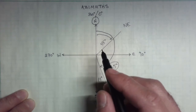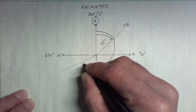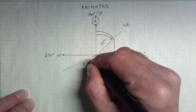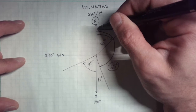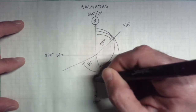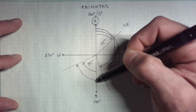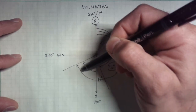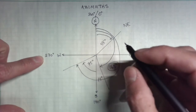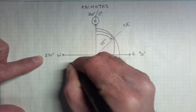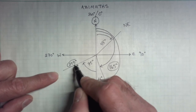In the southwest quadrant, the bearing line we looked at was south 75 degrees west. The azimuth for that line starts at the north and goes all the way around the circle until we hit that line. We have 90 degrees to east, 180 at the south, so 180 plus another 75 gives us 255 degrees as the azimuth for that line.